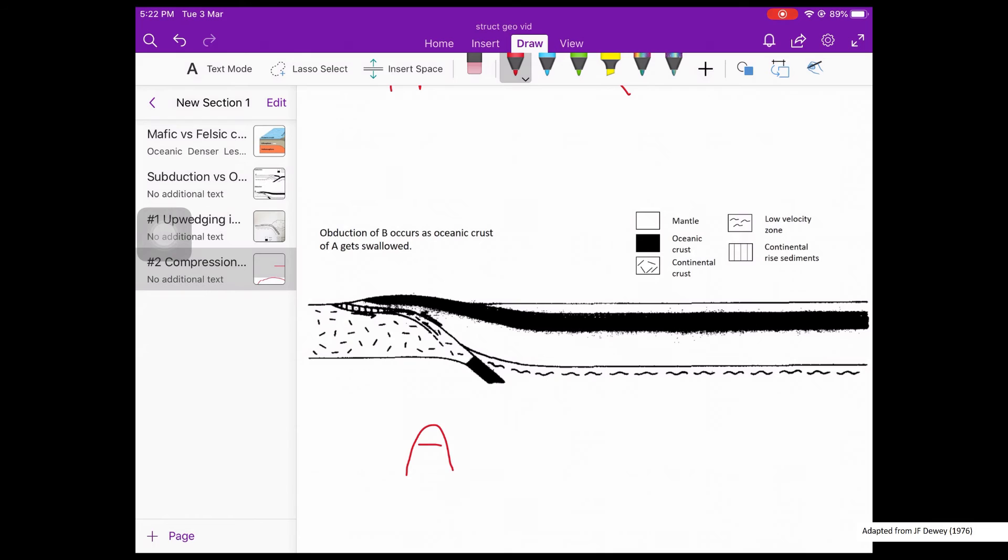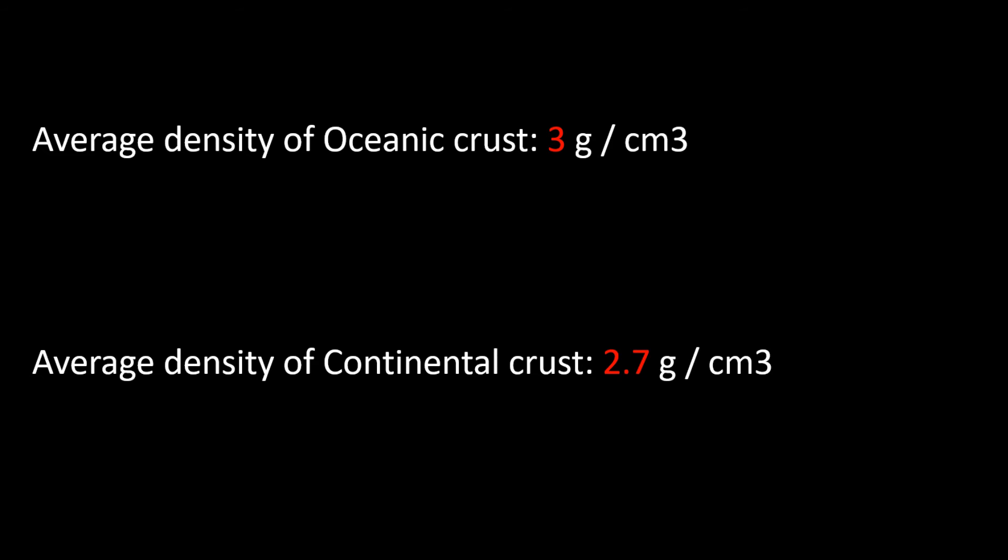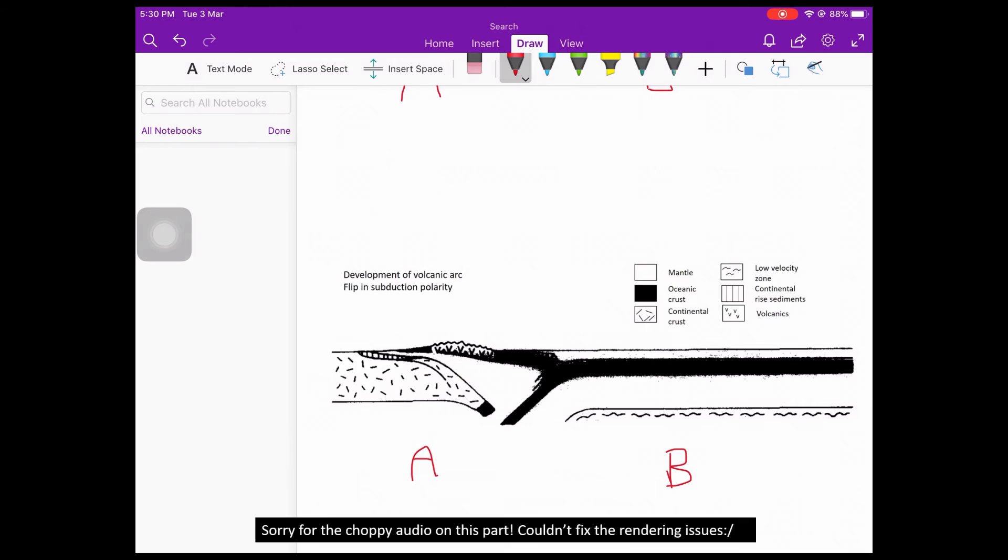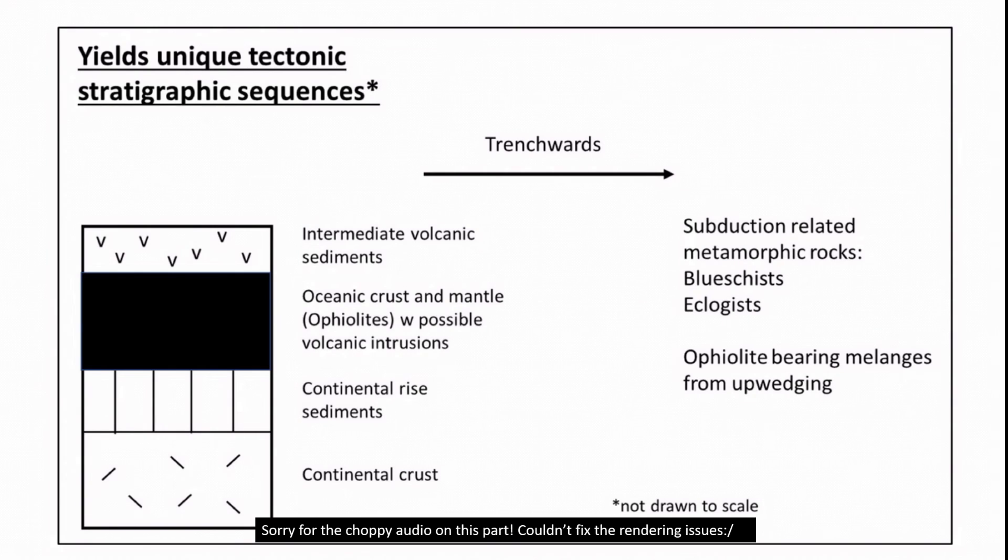And this is how obduction occurs. However, this is not necessarily the end of the story. Since the continental crust is significantly less dense than the oceanic crust, what we might see over time is a flip in subduction polarity, where the denser oceanic B plate is now subducted beneath the continental plate A, resulting in the formation of a volcanic arc. So what this produces is a unique arrangement of tectonic and stratigraphic units, with continental crust overlain with continental rise sediments, then the ophiolites, and potentially, but not always, subduction-related volcanics.